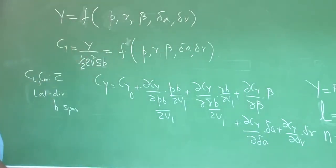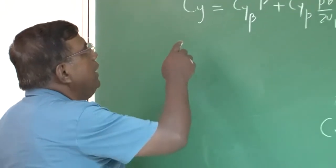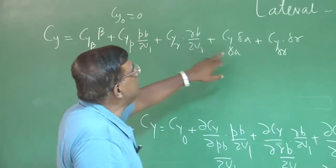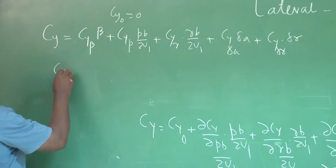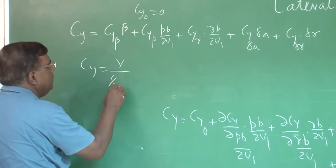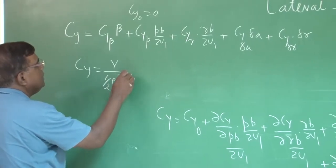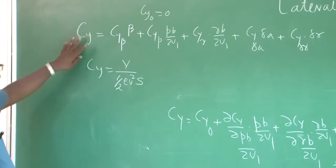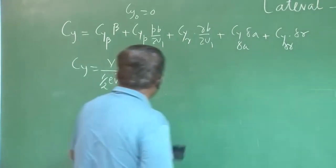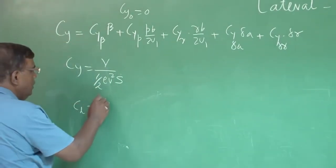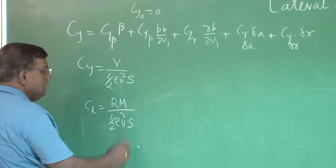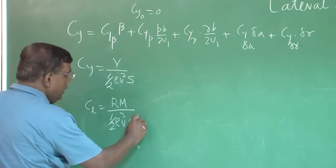In short notation, we can write this as Cy = Cy_beta times beta plus Cy_p times pb/2u1, and dCy/d(delta_r) times delta_r, where Cy is the side force y non-dimensionalized with dynamic pressure half rho v-squared times s. If I know this, I can easily write the expression for Cl and Cn. Cl is rolling moment non-dimensionalized with half rho v-squared times s, and since it is a rolling moment, a length term is required, so it is b.